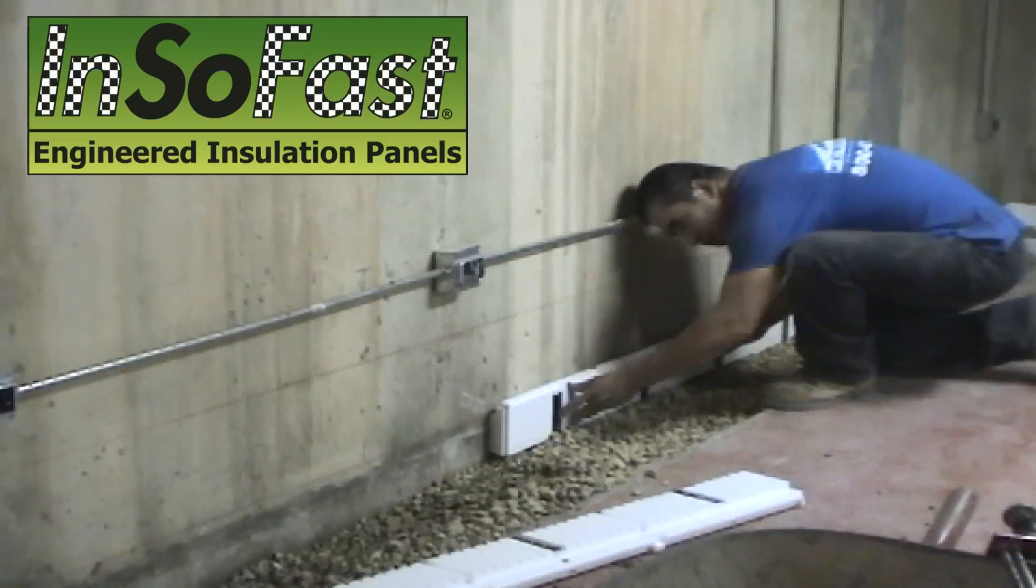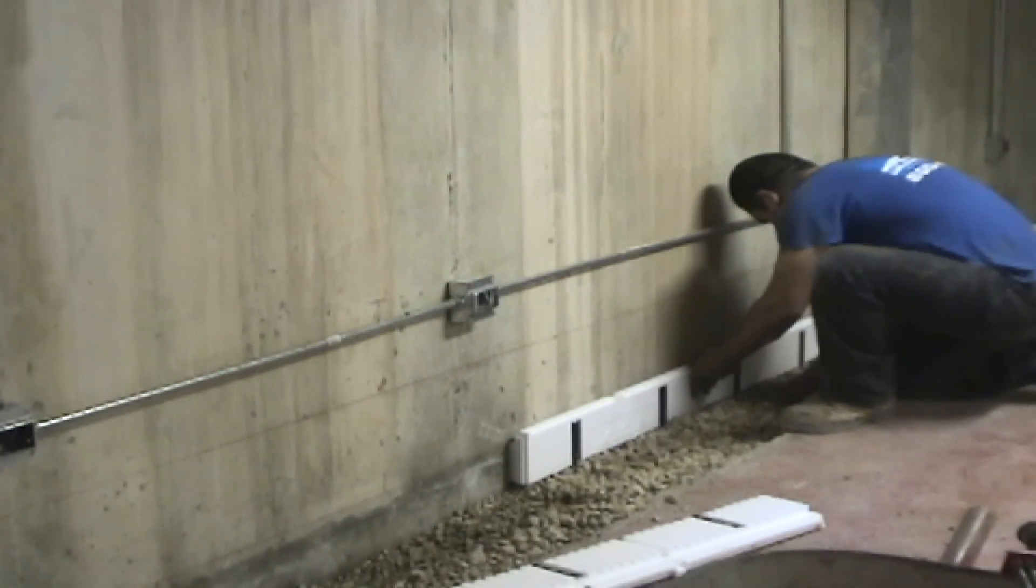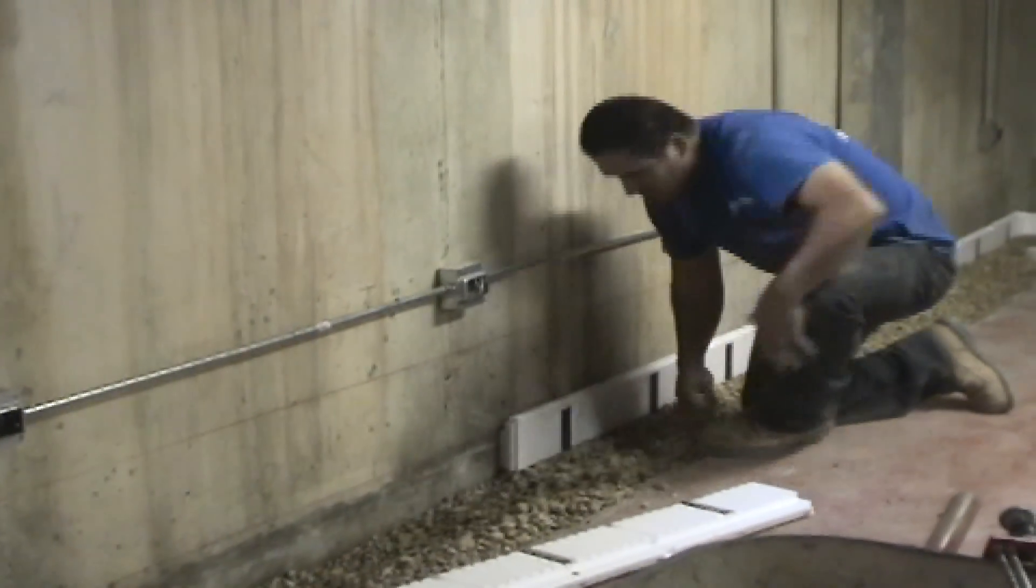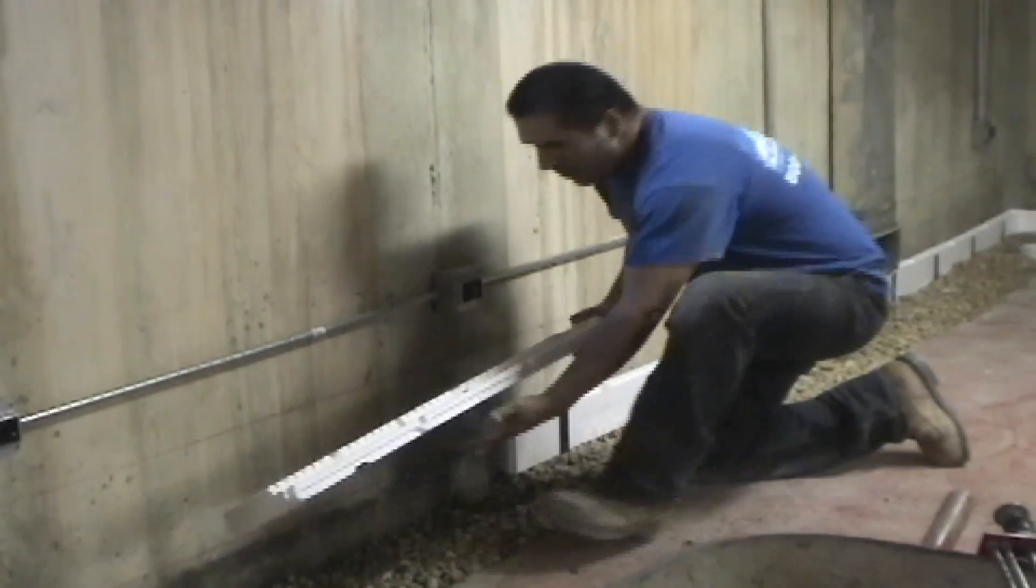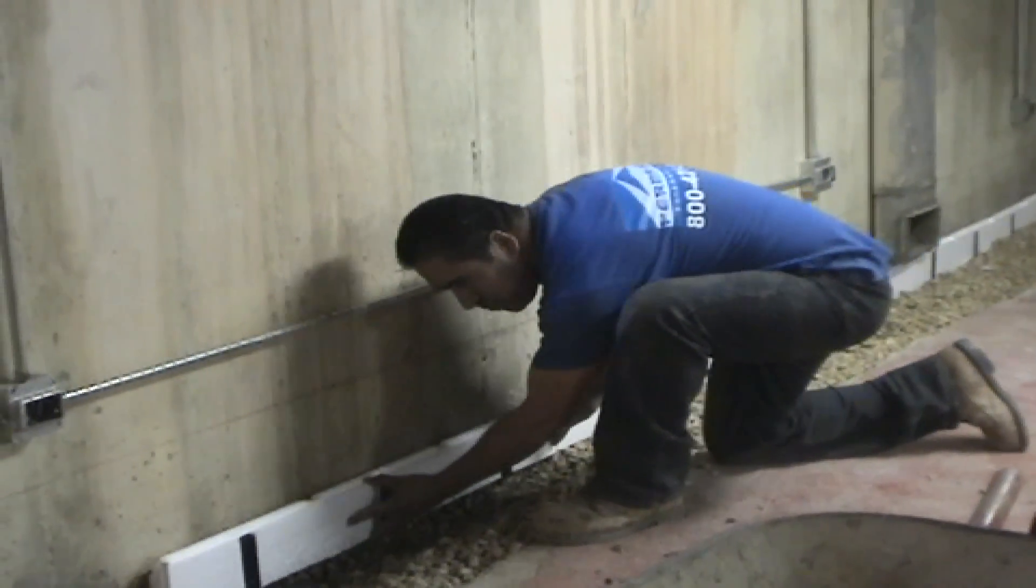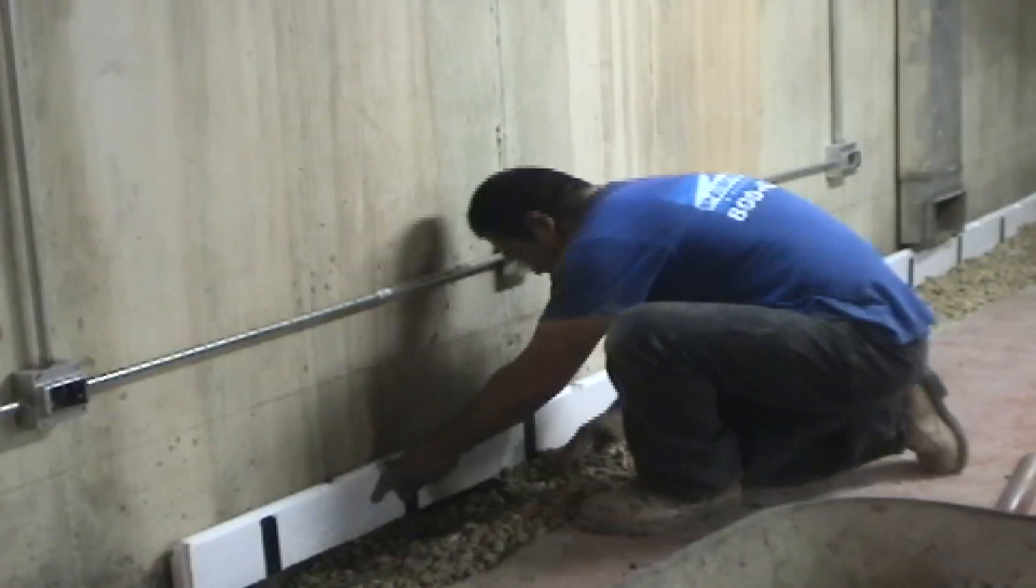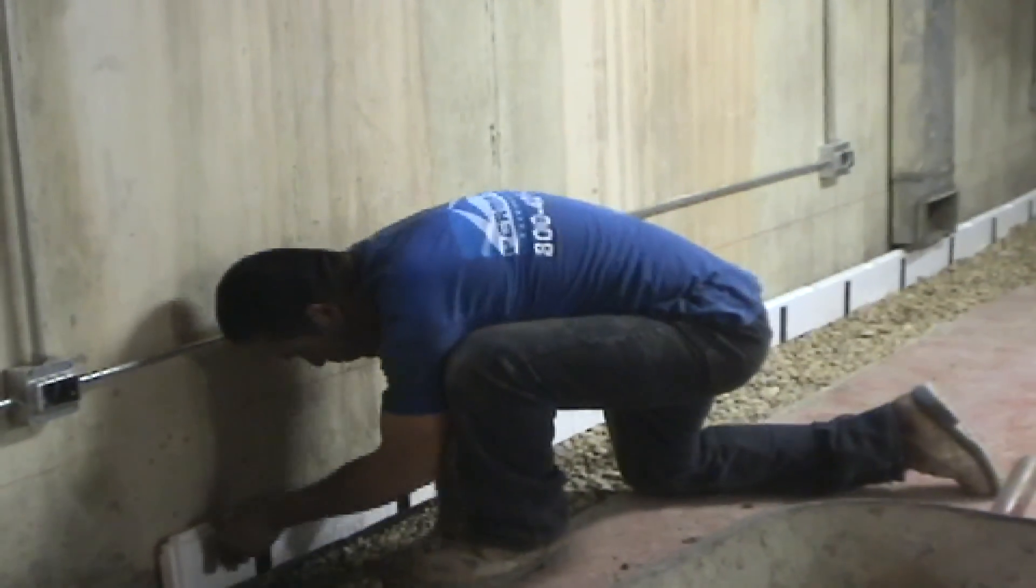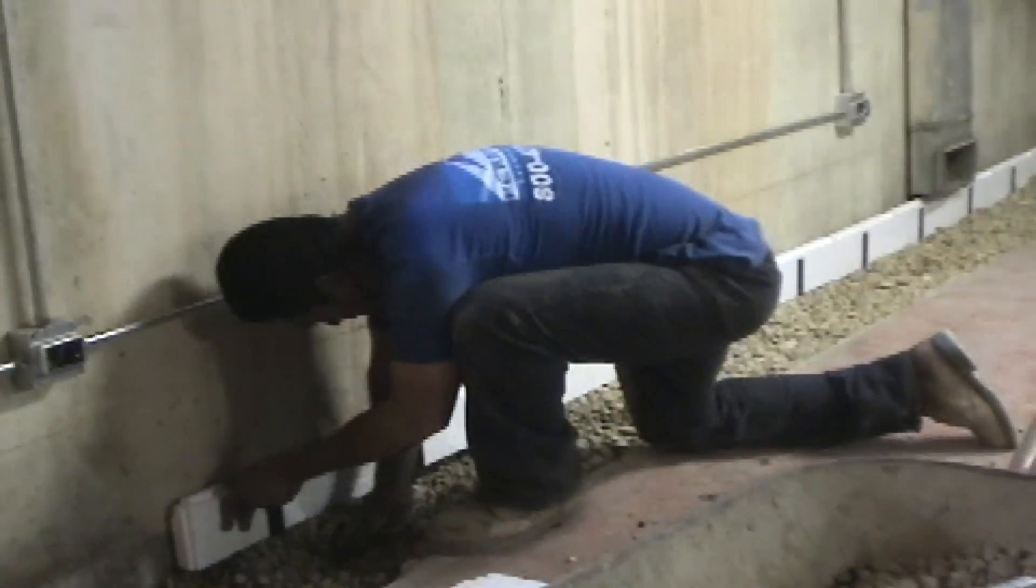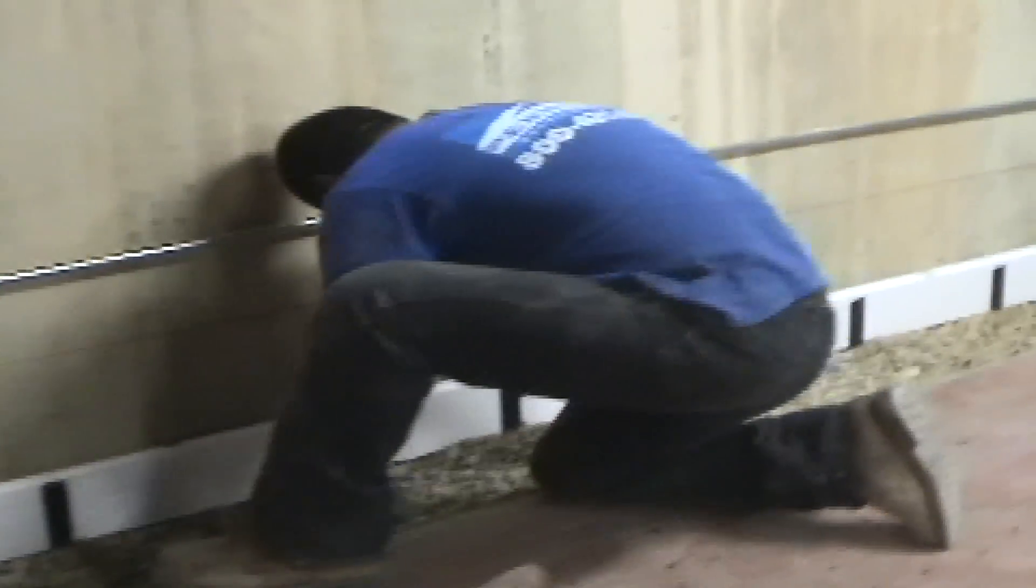This is actually a pretty complex video and there's a lot of things going on. This is a training that Ed and I did in Chicago with Permaseal. What they're doing is tying the Insofast system into a moisture drainage system so that if water were ever to come through the wall, it would drain down below and into the French drain that they have chiseled out the floor to install.